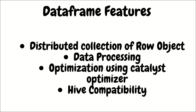Features of DataFrame: First, it's a distributed collection of row objects — data organized into named columns, conceptually equivalent to a relational database table but with richer optimization under the hood. The optimization that was missing in RDD is now available in DataFrame. Second, data processing — it supports structured and unstructured data formats such as Avro, CSV, Elasticsearch, and Cassandra, and storage systems like HDFS, Hive tables, and MySQL. It can read and write from all these various data sources.